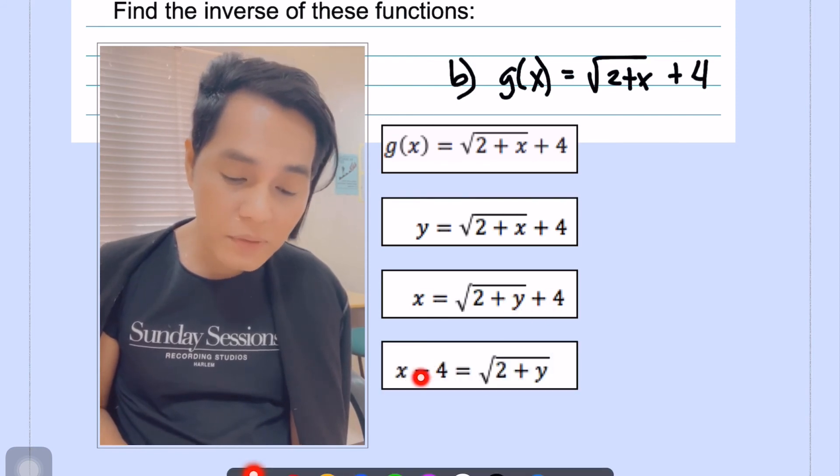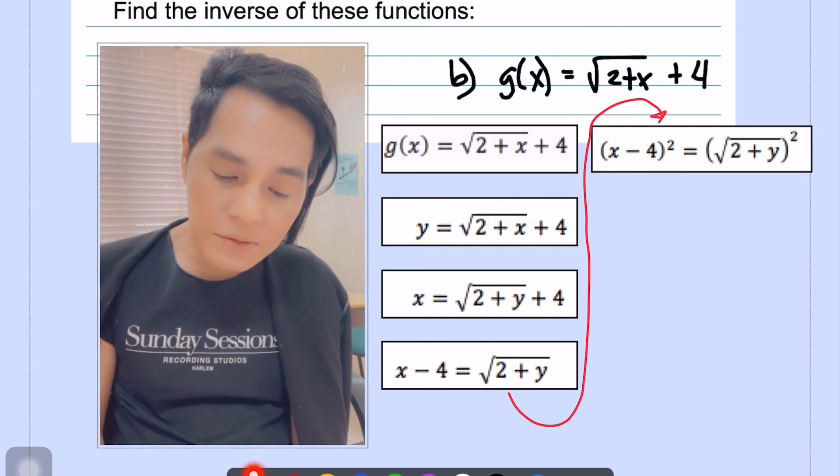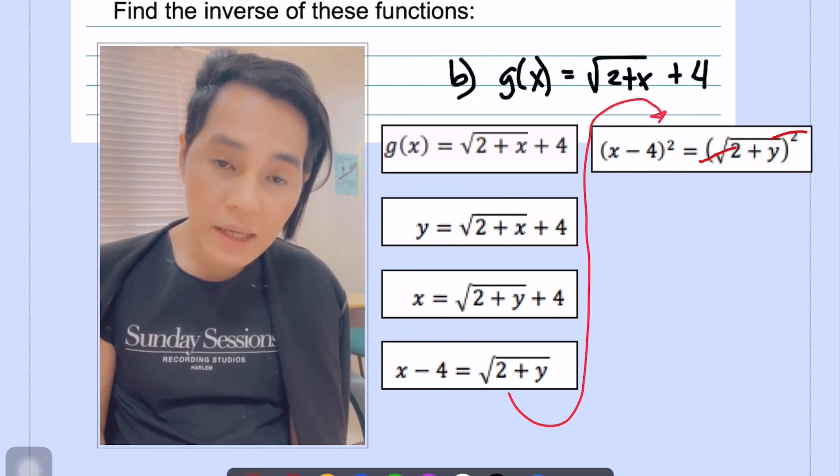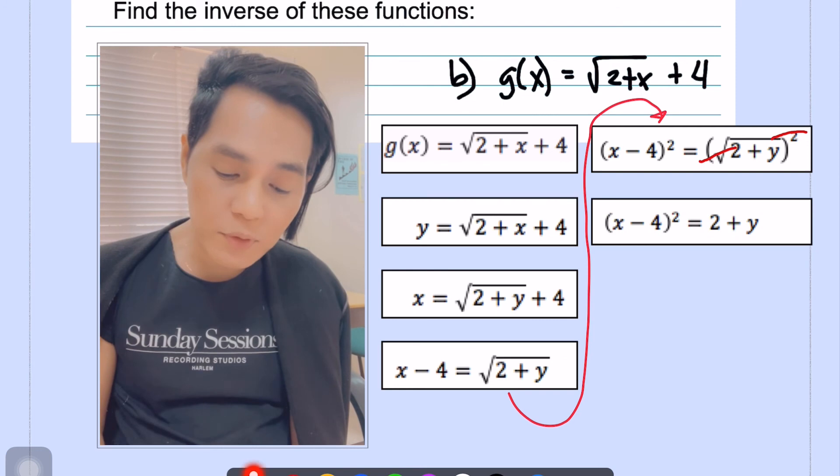So algebraically, that's how you do that. And then after here, we are going to square both sides of the equation. And then that's the reason why we have this.